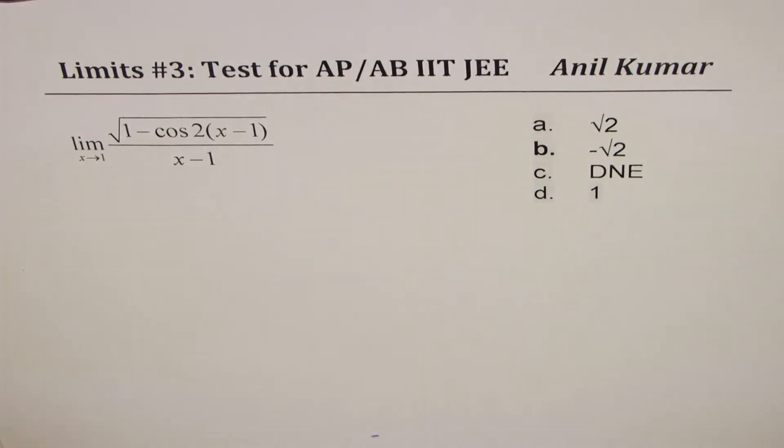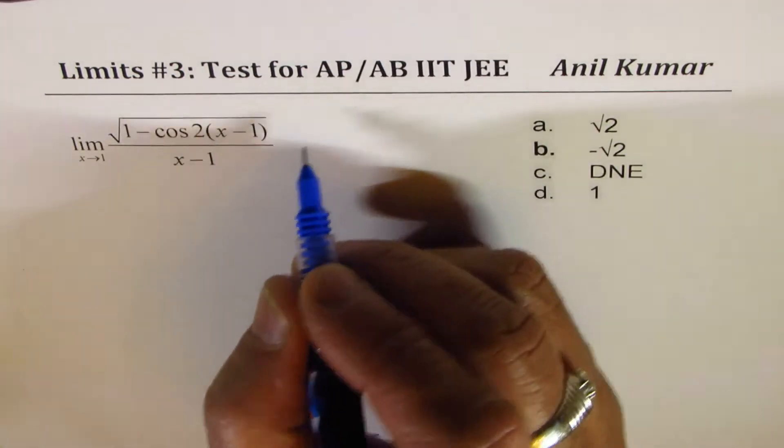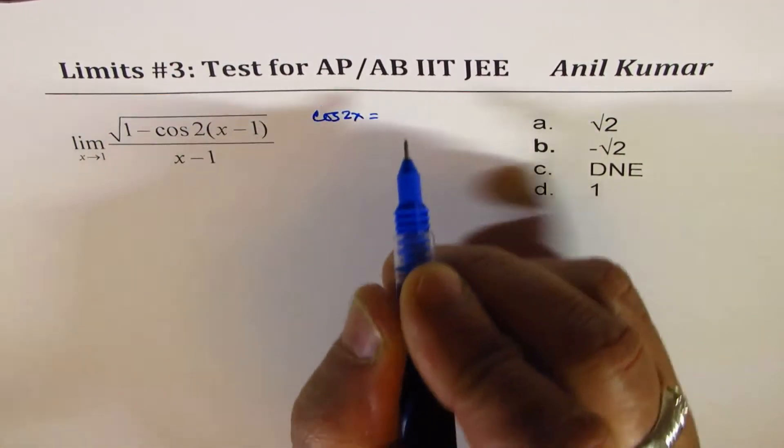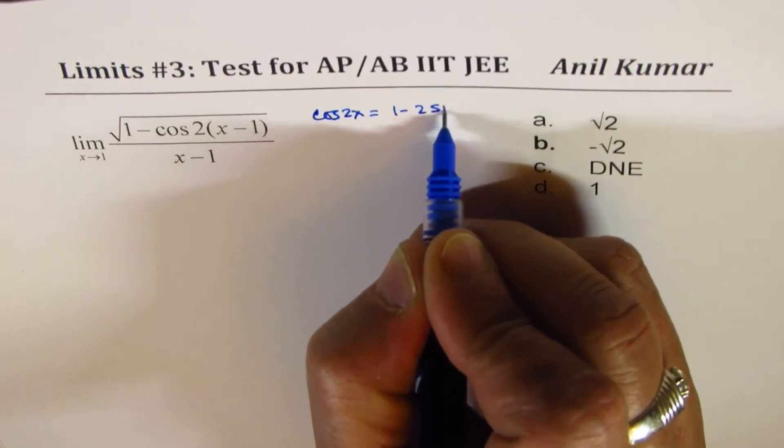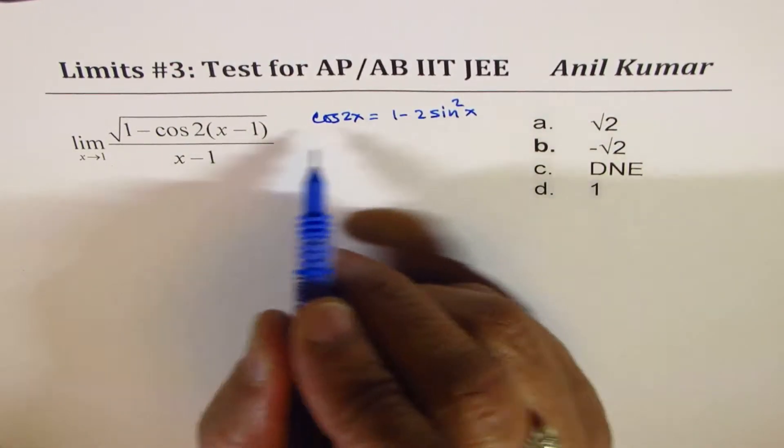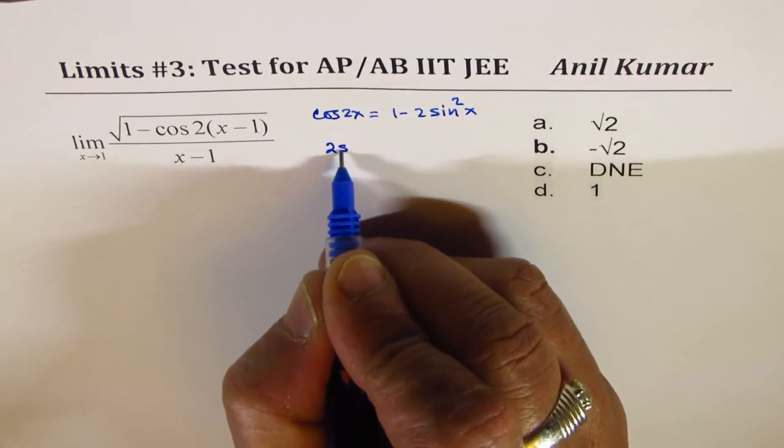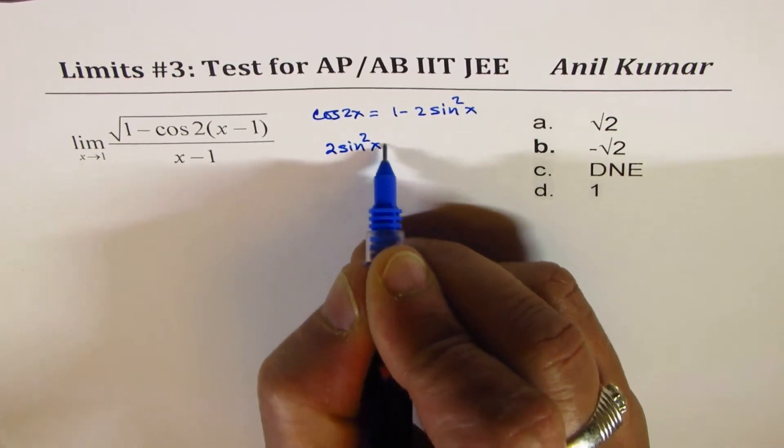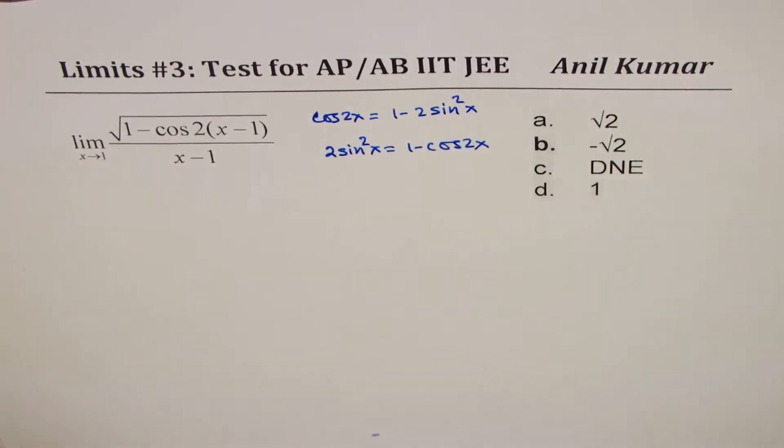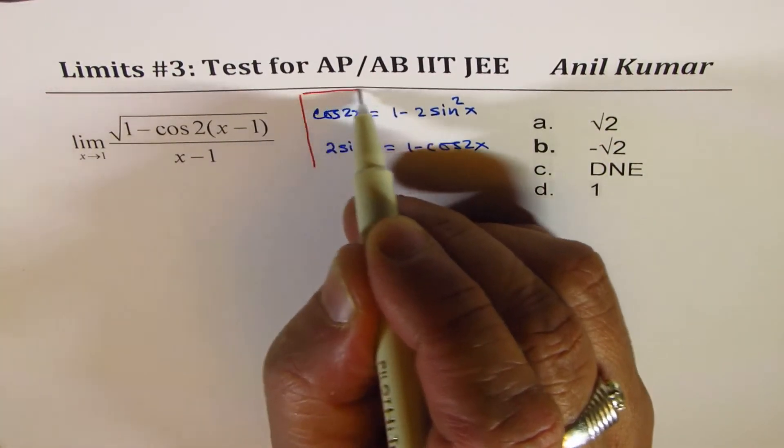Let's see which one is correct. We will use double angle formula. Cos 2x is 1 minus 2 sine square x, or we could write 2 sine square x is 1 minus cos 2x. So that is the formula which can be applied to simplify the given expression.